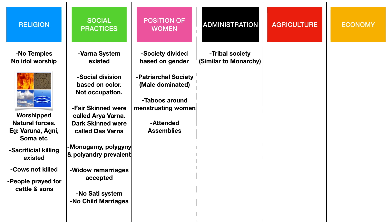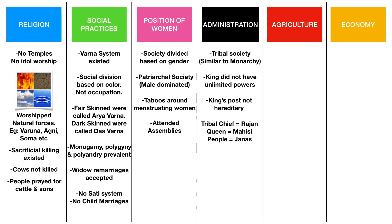The early Vedic period had a tribal society similar to monarchy. However, the king did not have unlimited powers, and the king's post was not hereditary — anyone found fit was selected as king. The tribal chief was called Rajan, the queen was called Mahisi, and the people were called Janas. The king or Rajan was also called Gopati, meaning the protector of cows, showing how much importance the Vedic people gave to protecting cows.